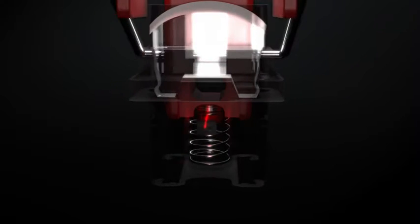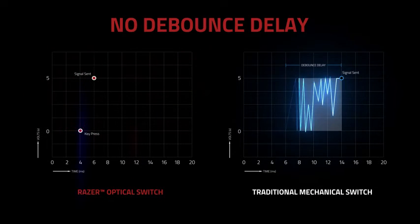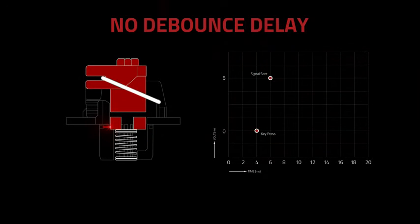Since RAZR Linear Optical Switches actuate using infrared light instead of physical contact, they don't have the debounce delay normally found in mechanical switches, which means the moment you press a key, the signal is instantly sent.